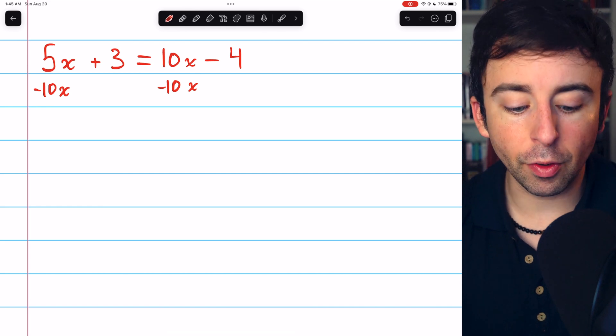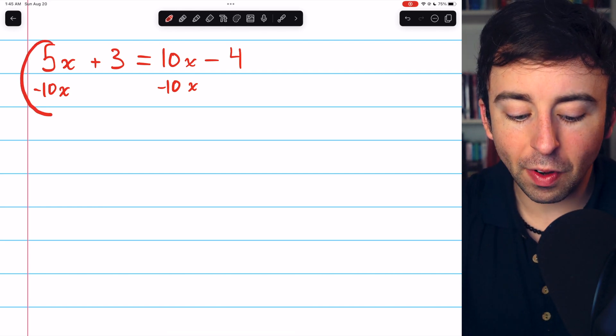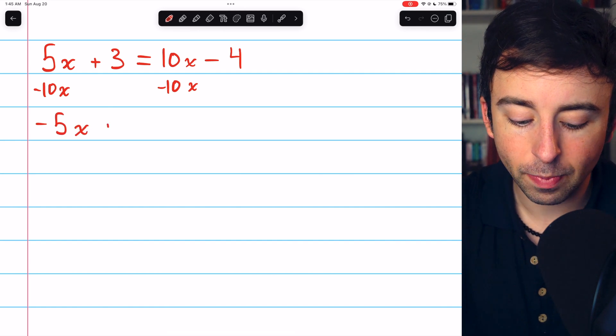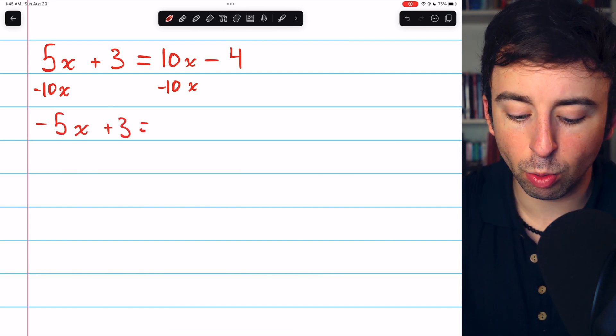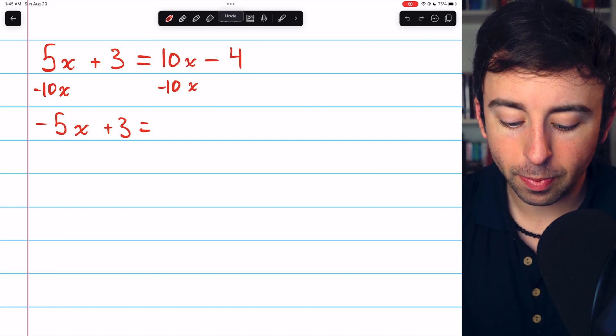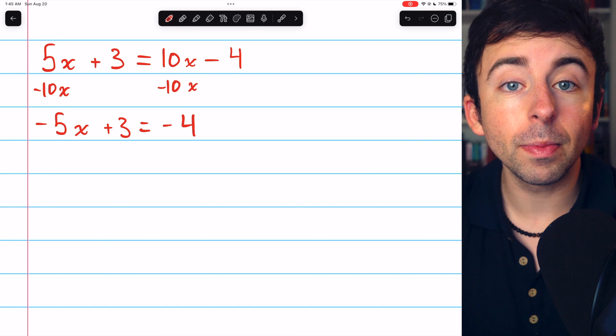On the left, if we subtract 10x, 5x minus 10x is minus 5x. We, of course, still have the plus 3, and on the right, 10x minus 10x is just 0. So the only thing left on the right is minus 4.